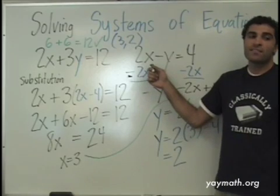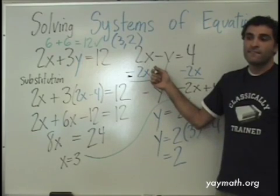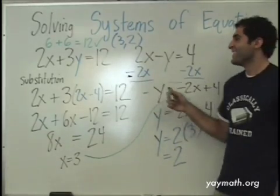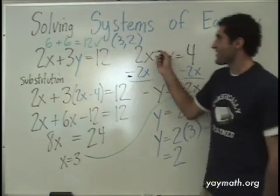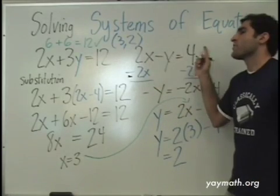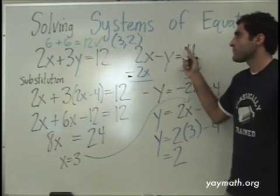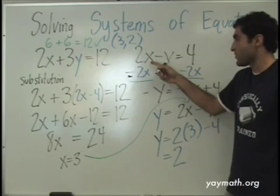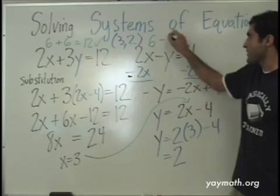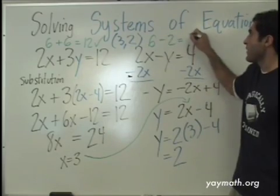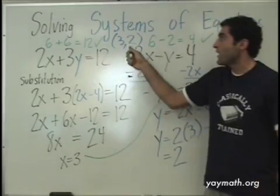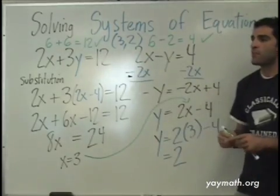Let's check the other equation too. Two times three minus two — that's six minus two equals four. That works too. So we have proof that the point (3, 2) works for both equations.